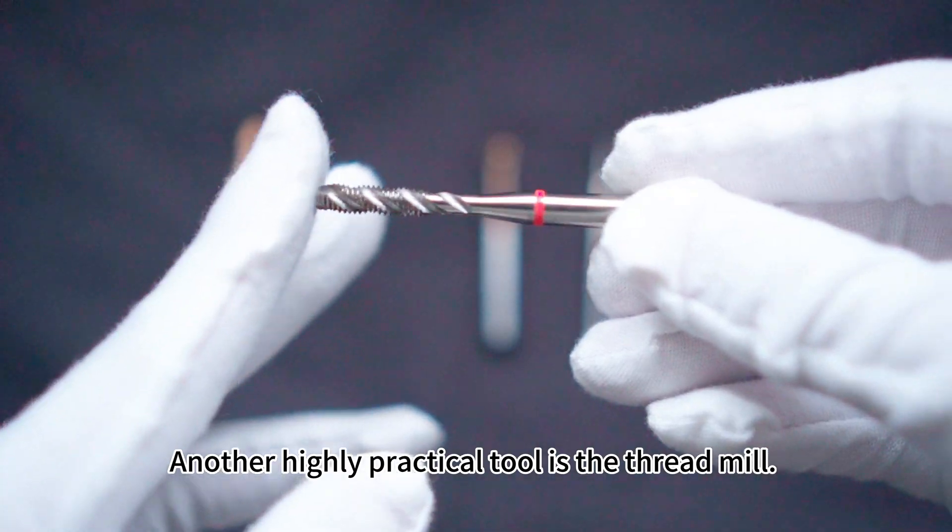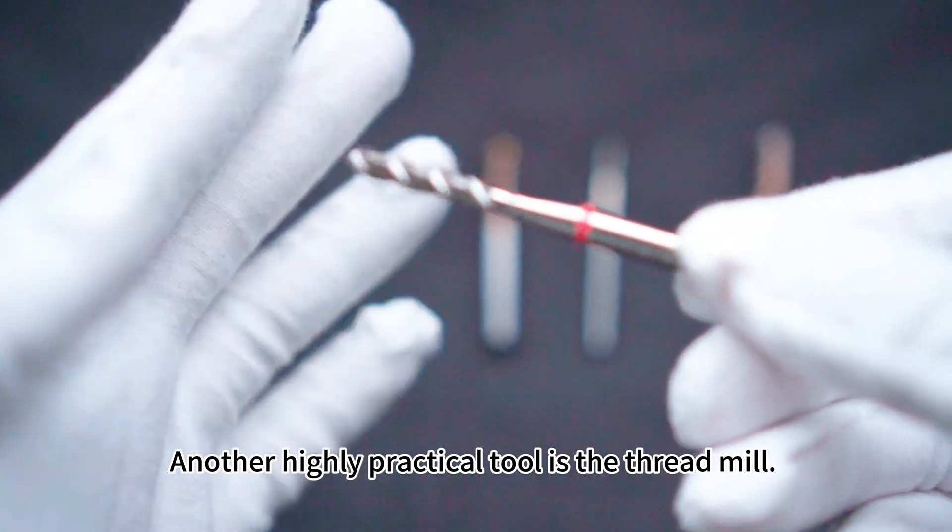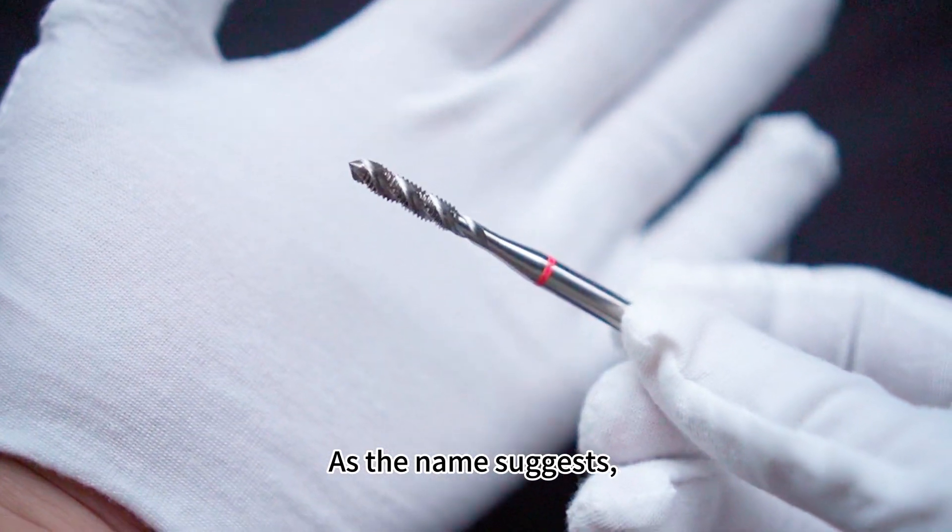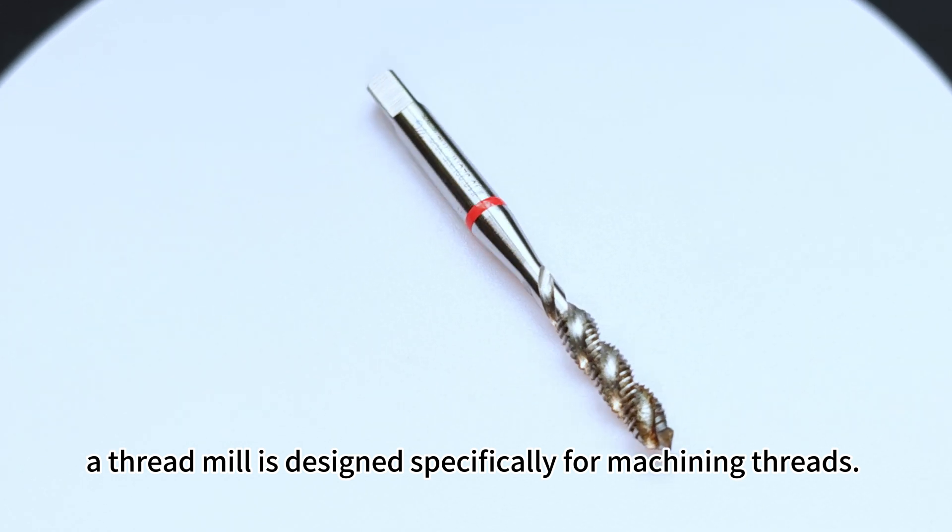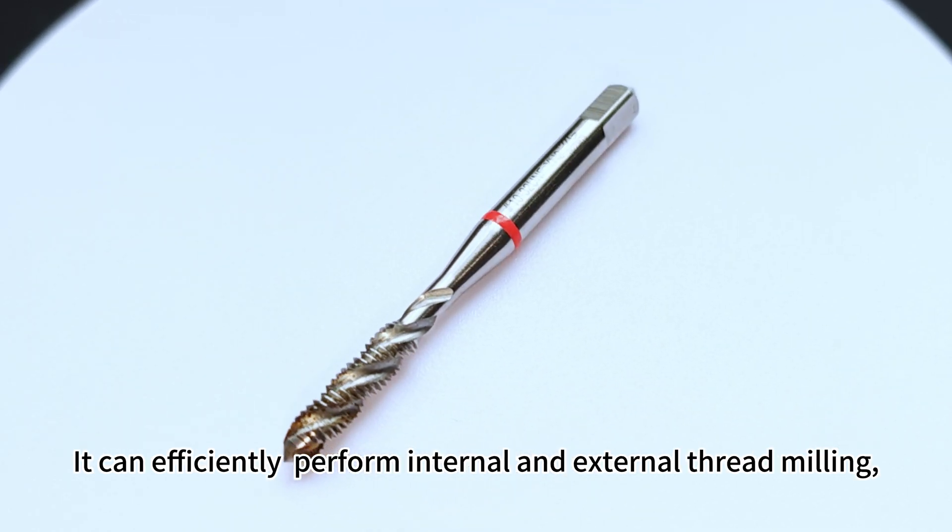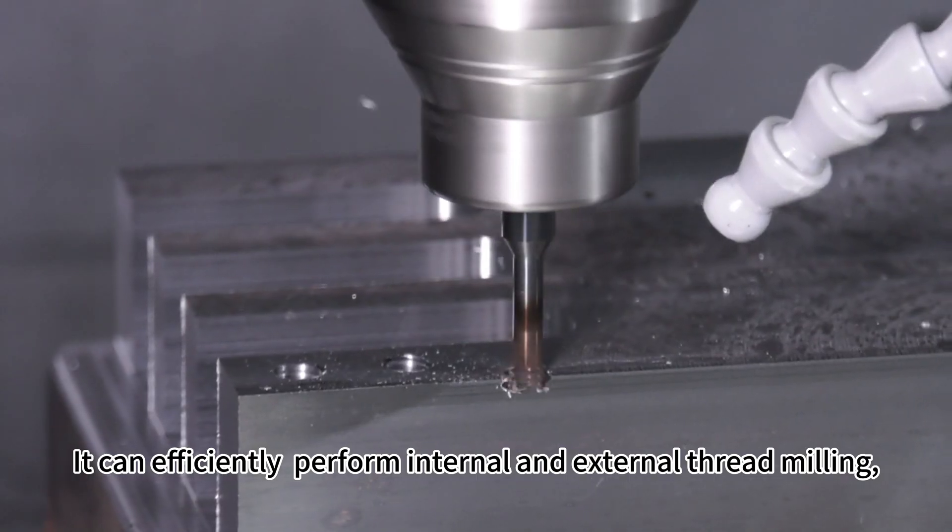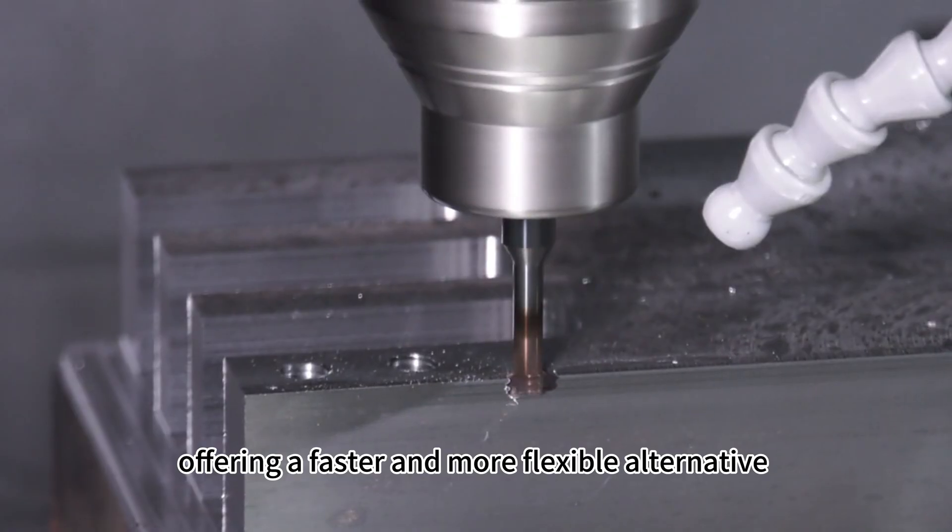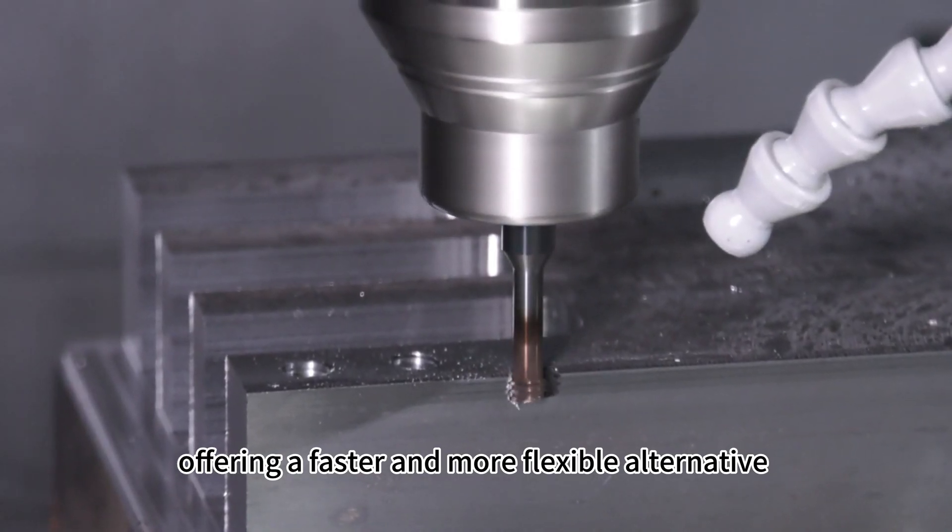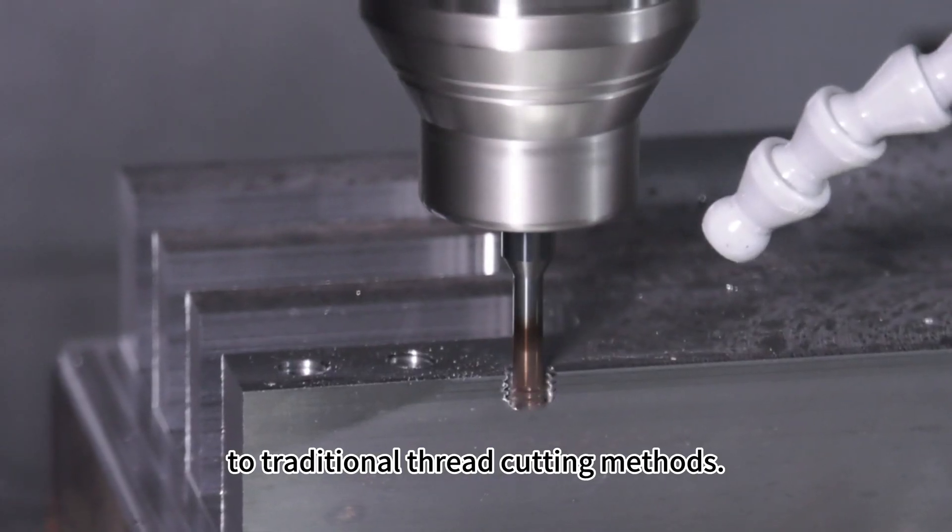Another highly practical tool is the thread mill. As the name suggests, a thread mill is designed specifically for machining threads. It can efficiently perform internal and external thread milling, offering a faster and more flexible alternative to traditional thread cutting methods.